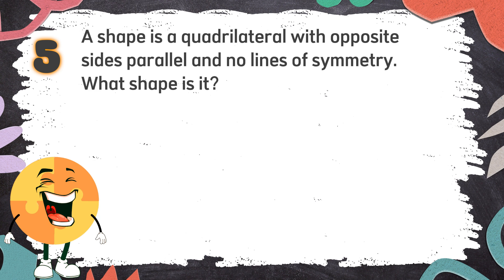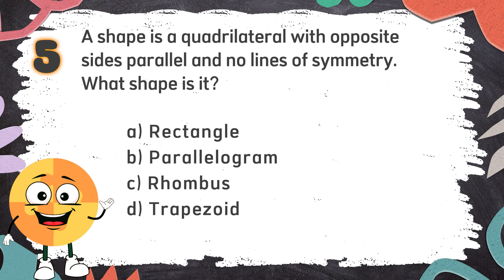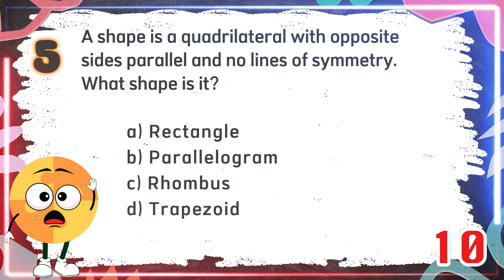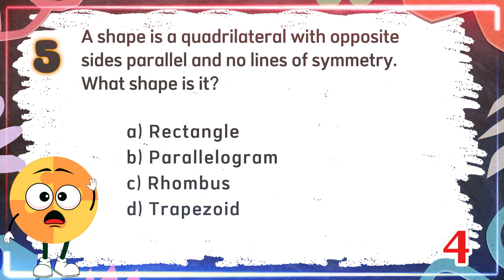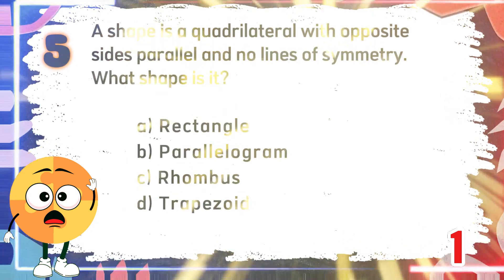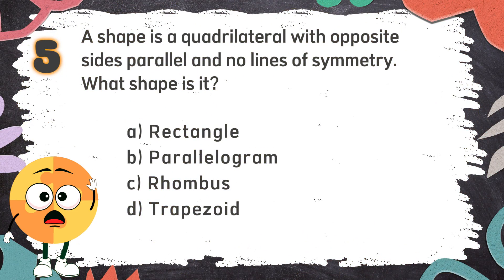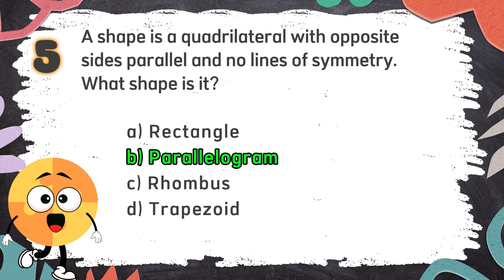Number 5: A shape is a quadrilateral with opposite sides parallel and no lines of symmetry. What shape is it? The choices are: A. Rectangle, B. Parallelogram, C. Rhombus, D. Trapezoid. The correct answer is B. Parallelogram. A parallelogram has opposite sides parallel, but unless it's a rectangle or rhombus, it doesn't have lines of symmetry.